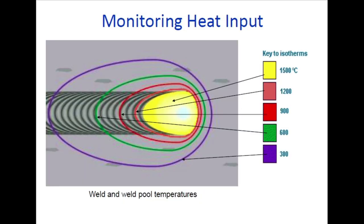When doing welding, the temperature distribution is shown as isotherms. The innermost area is 1500°C (yellow), then 1200°C, 900°C, 600°C, and 300°C moving outward. These isotherms show the temperature profile around the weld pool.